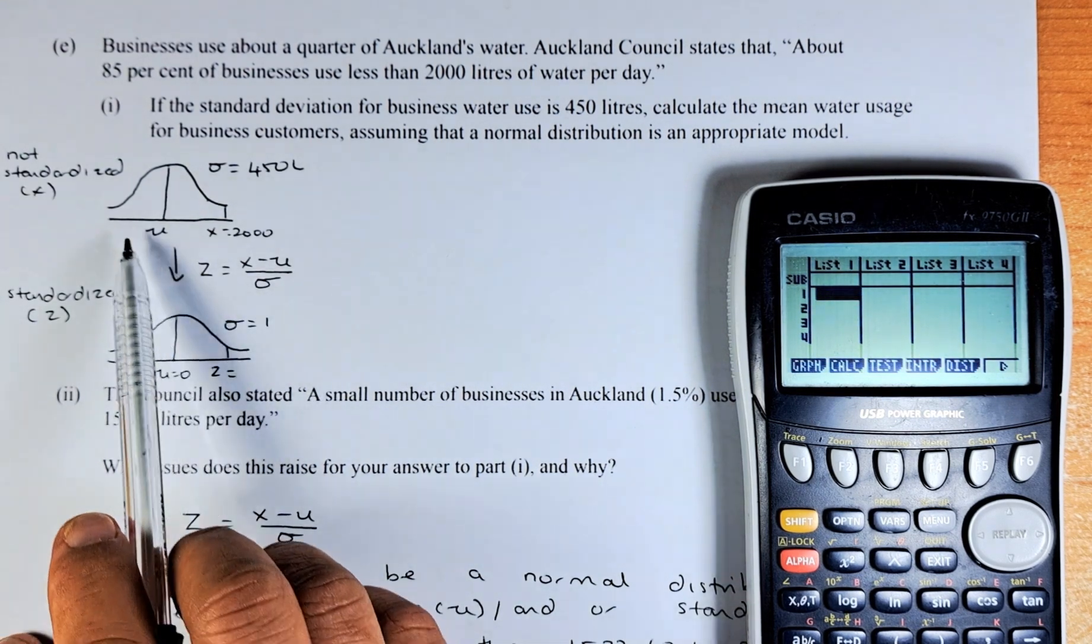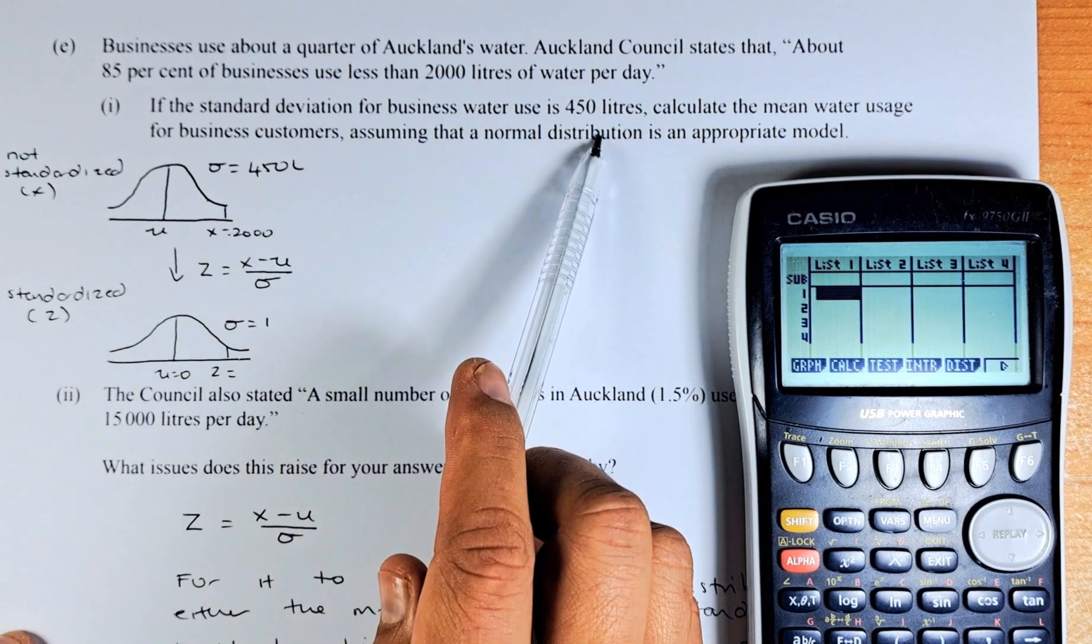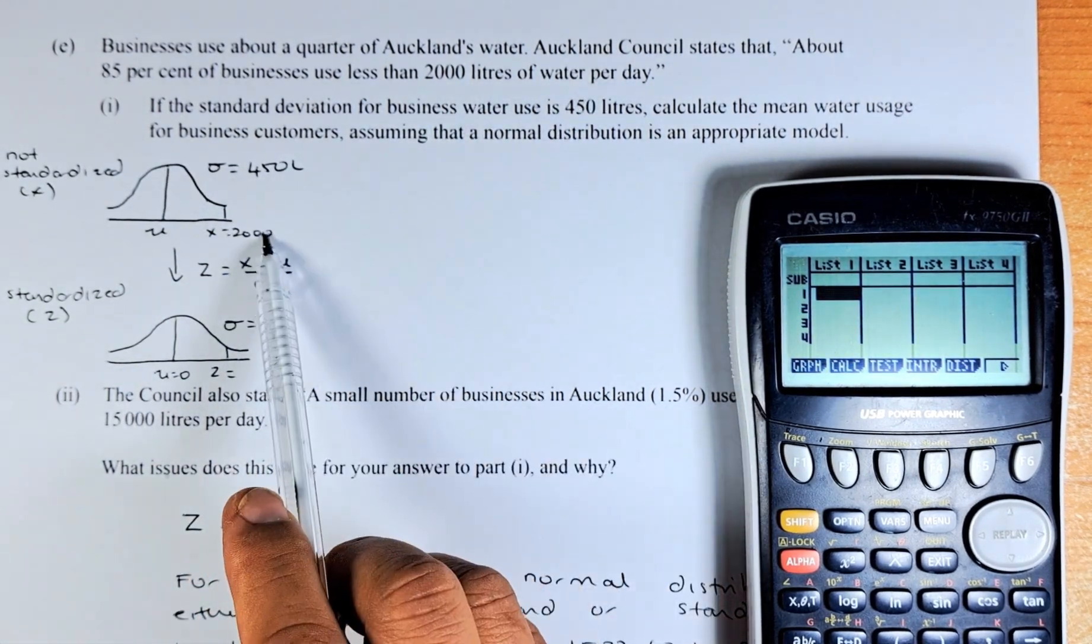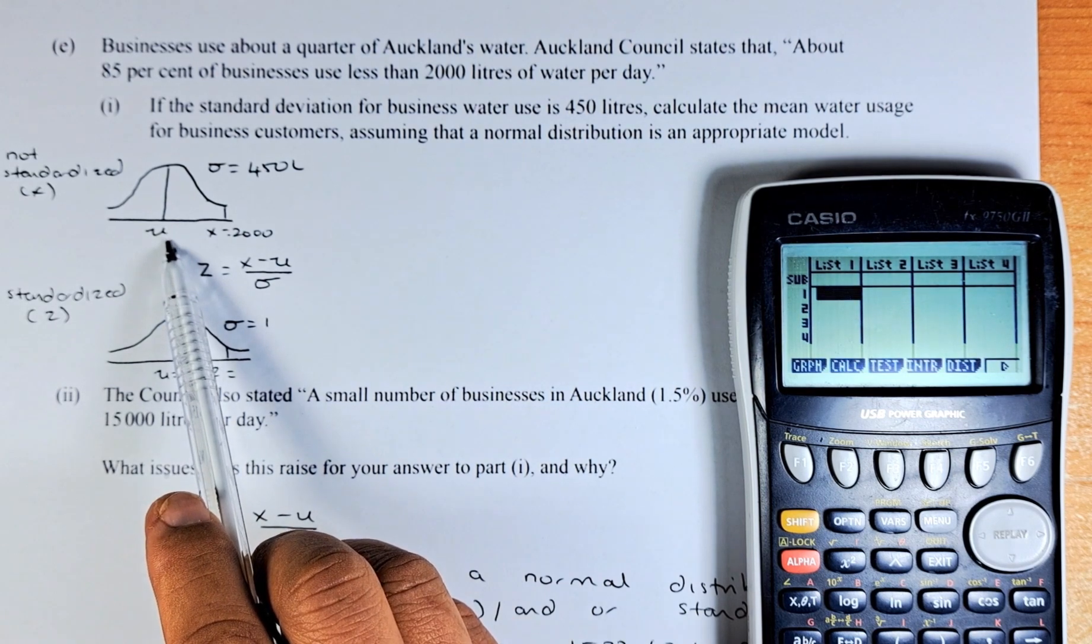So we have drawn the non-standardised. Sigma is 450 litres. X is 2,000 given here. You have to find nu or the mean.